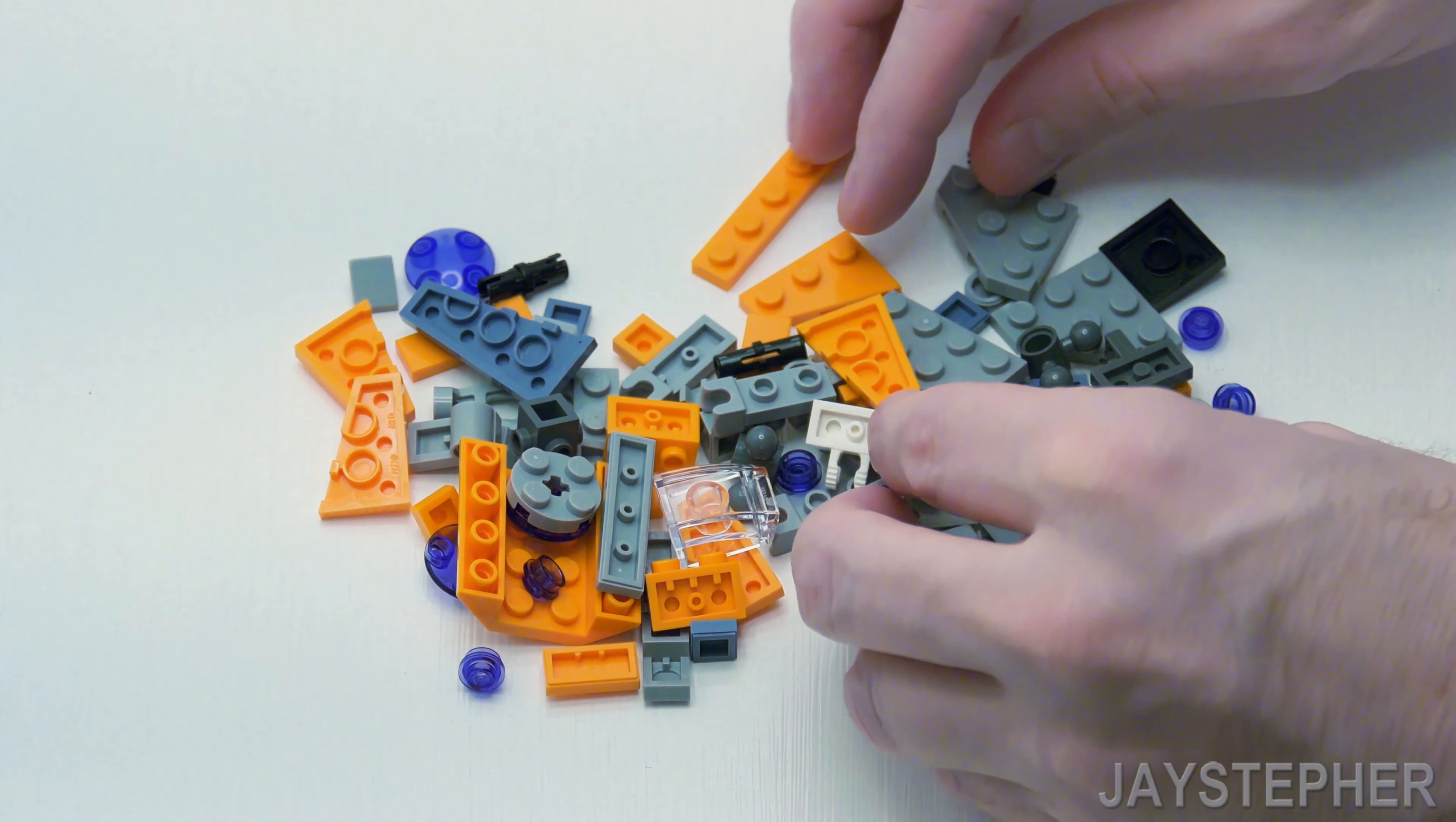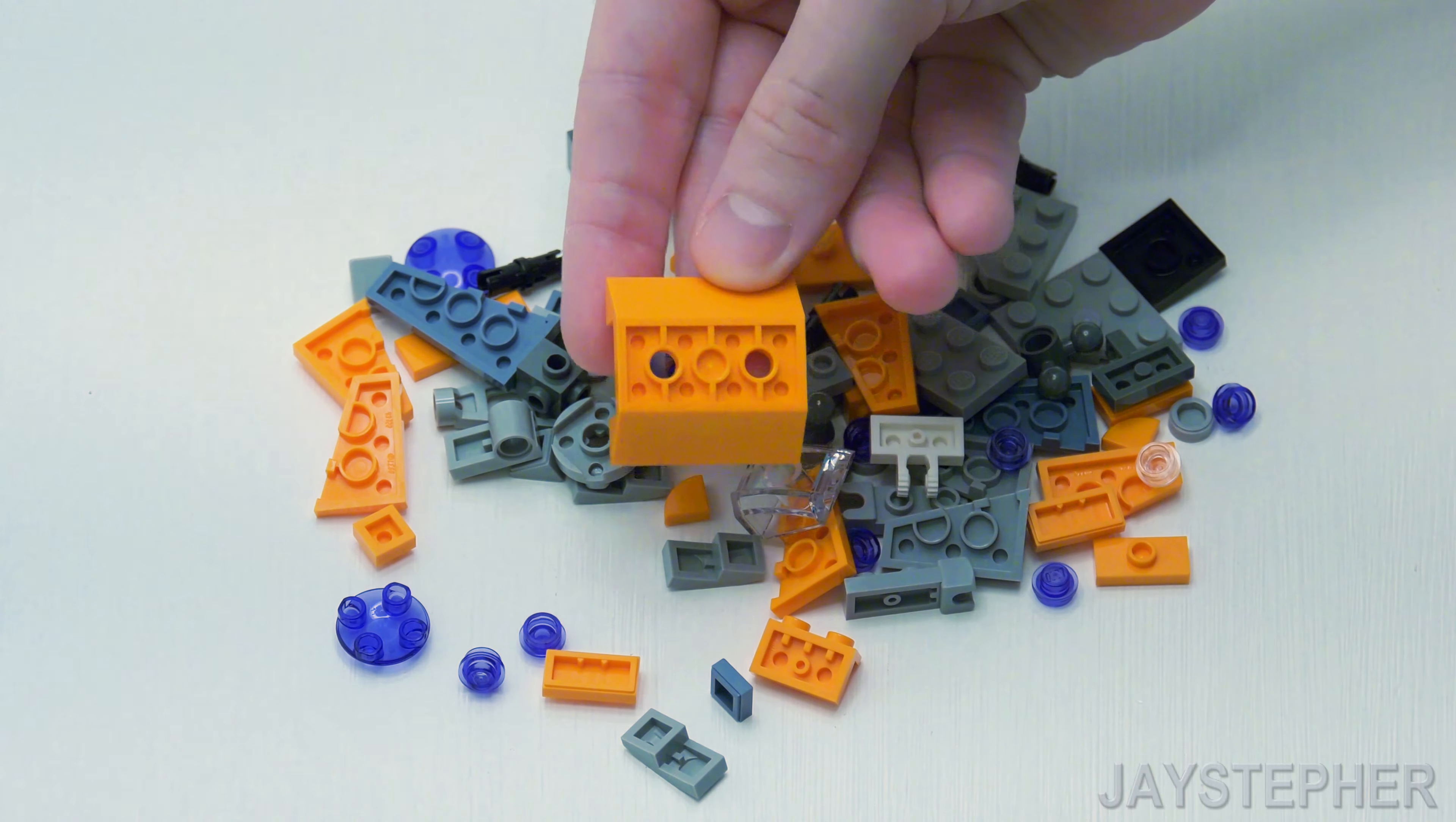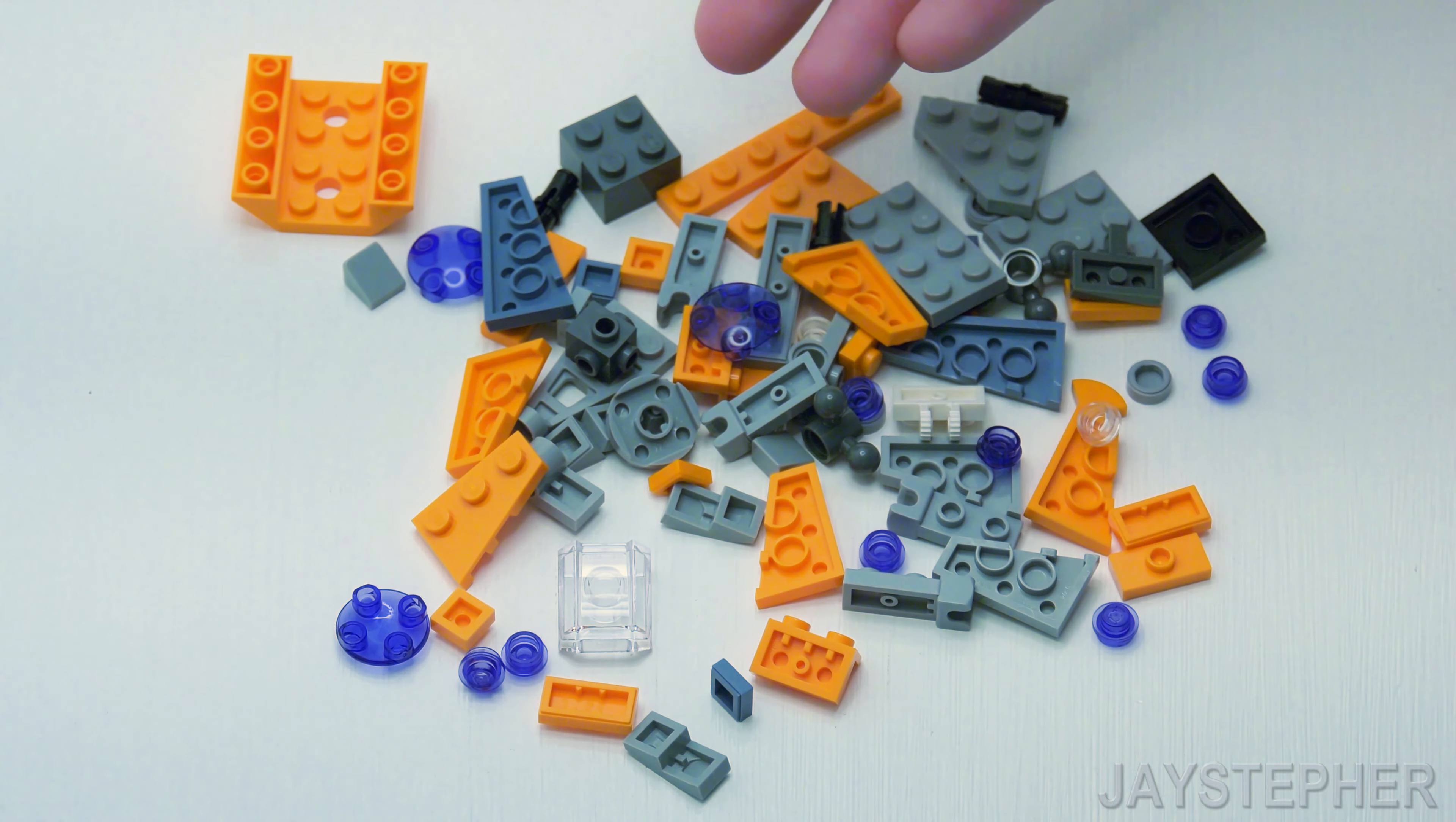Well, we do get a lot of plates. We got a brick. We got one of these 2 by 4 plates with the two inverted 45-degree slopes. Lots of angular plates. It's a transparent brick that's possibly used for a windshield. Lots of studs.